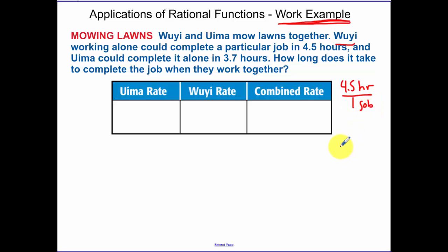So if his rate is 4.5 hours per one job, what's his rate for completing the job? His rate for completing the job is 1 over 4.5. The other guy's rate is 1 over 3.7. Their combined rate is 1 over x. So we have 1 over 3.7 plus 1 over 4.5 is equal to 1 over x.